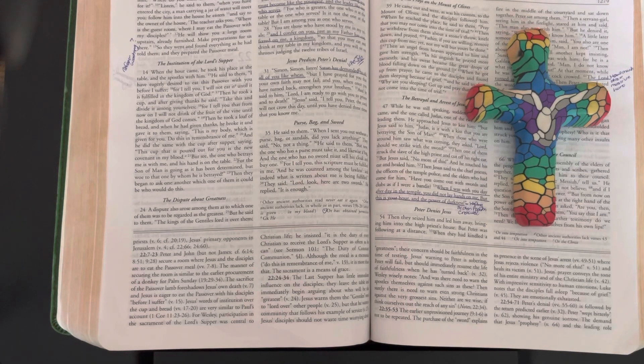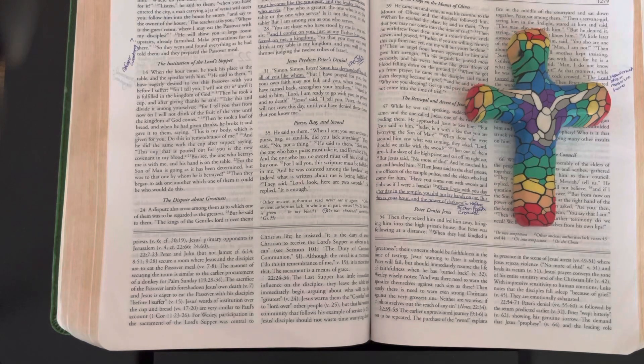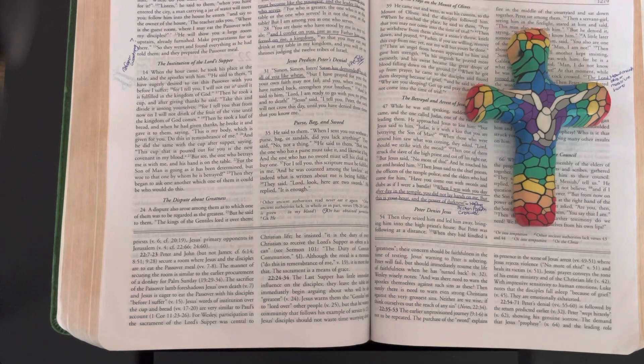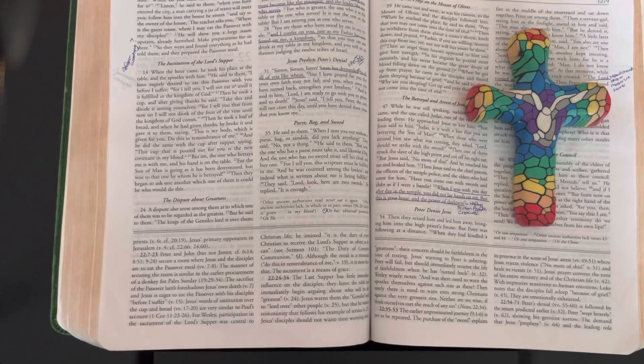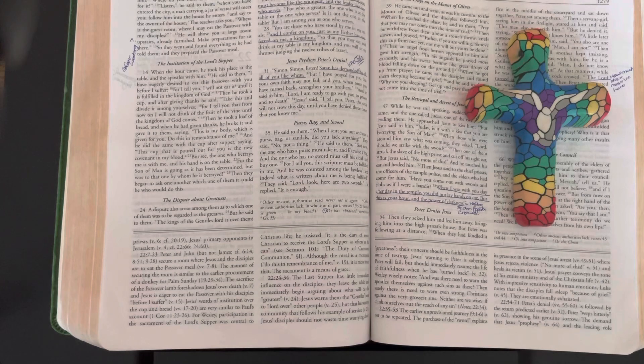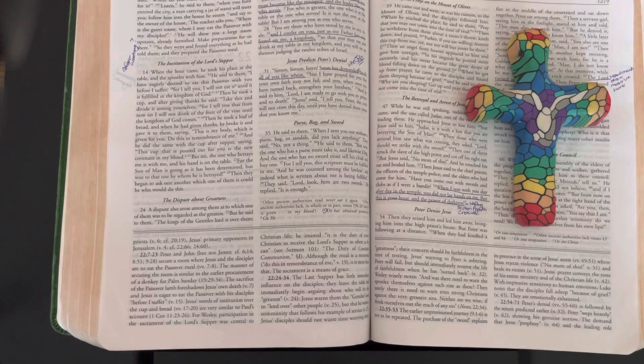Then he took a loaf of bread, and when he had given thanks he broke it and gave it to them saying, "This is my body which is given for you. Do this in remembrance of me." And he did the same with the cup after supper, saying, "This cup that is poured out for you is the new covenant in my blood."